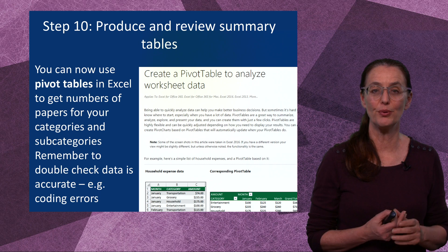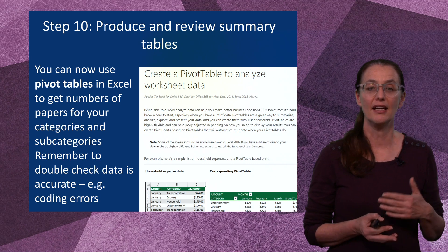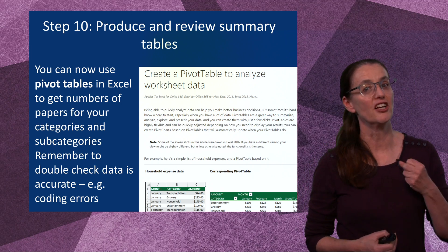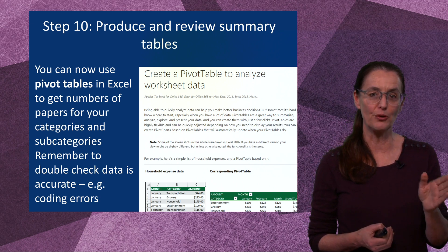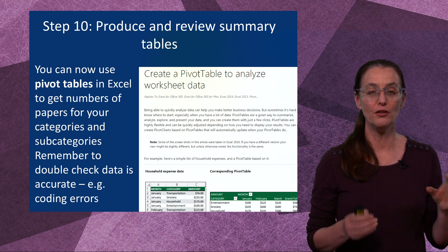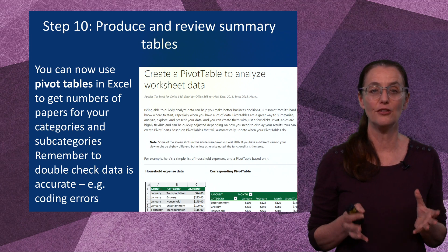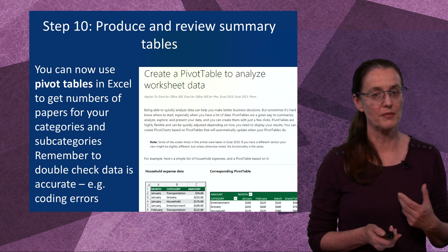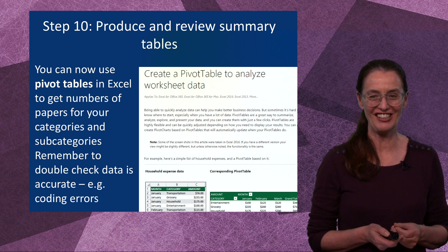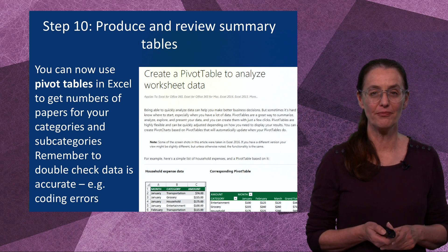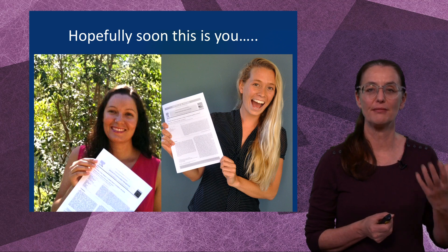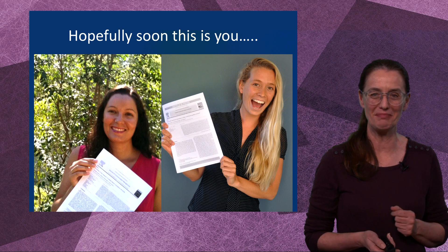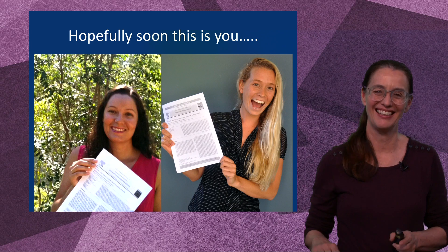Step 10 is really important: produce and review summary tables. This is important not only for being able to analyse the data, but also to check it's correct before you get too far. If you have coded using ones, you can now use pivot tables in Excel to work out the numbers for the categories and subcategories. Definitely remember to double-check your data for coding errors. In the next video we're going to go through some of the more advanced ways you can analyse those data, particularly if you've been able to use numerical coding with ones and blanks — so check that one out. Thank you.